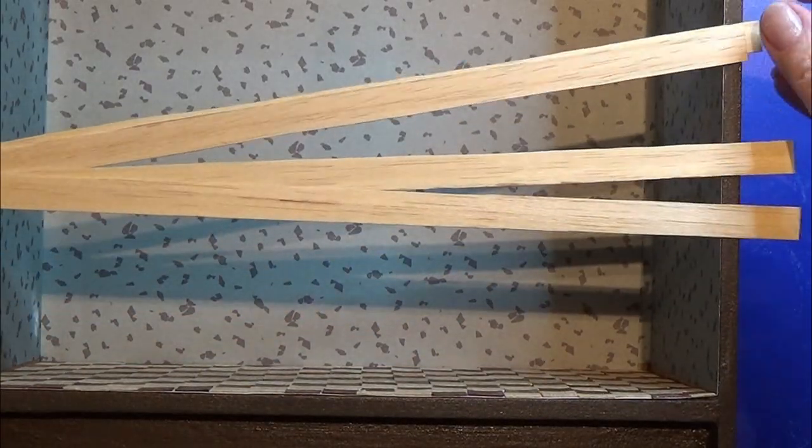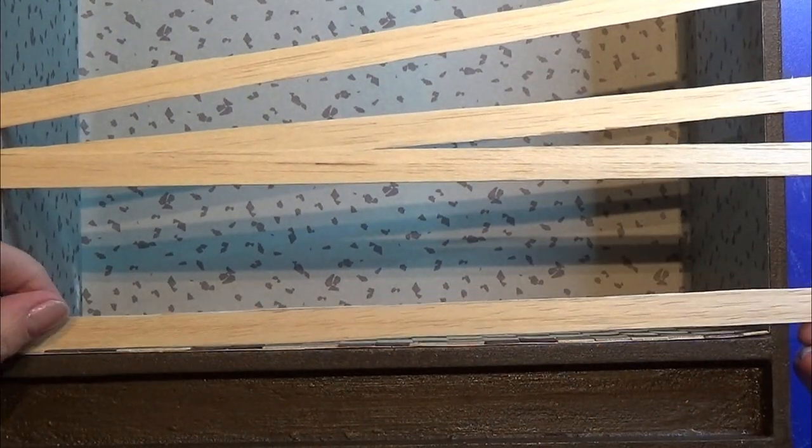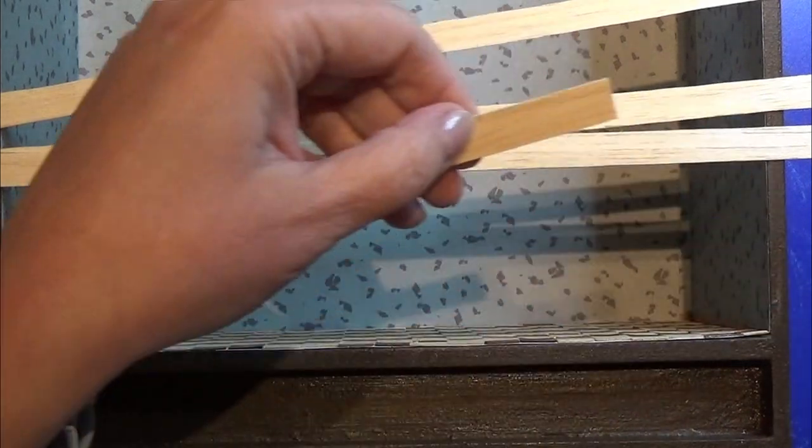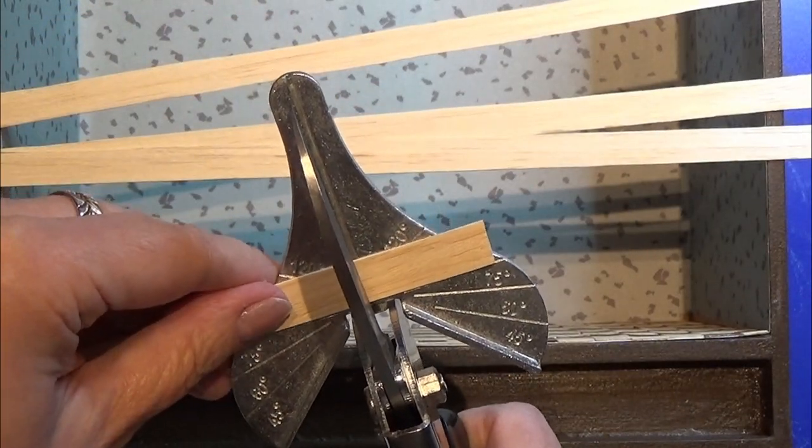I'm using my wood veneer to make some baseboards around the floor. I'm cutting them to length with my easy cutter, and then I'm just going to glue them down with a tiny bit of wood glue.